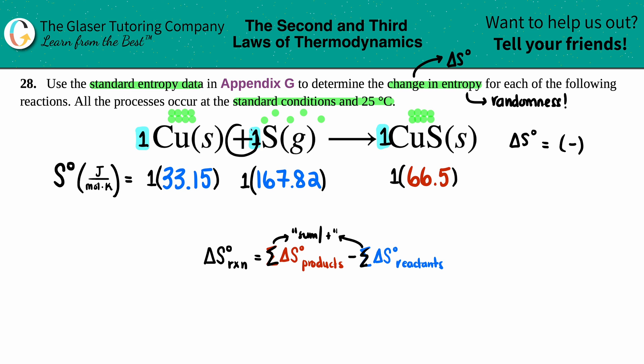And then you sum up the ones that you have multiple components. So it's Cu plus S. So I have to add these two values together. I don't have to add anything on the product side because it's just a CuS. So the product side is going to be the same 66.5. And the reactant side, 33.15 plus 167.82, I get 200.97.